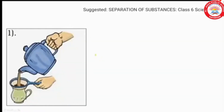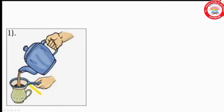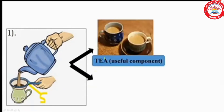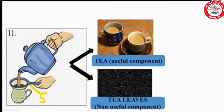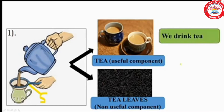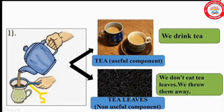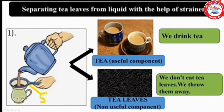The first example: we use a strainer to separate tea leaves from tea. Here we are separating two components — the first one is tea and the second one is tea leaves. Tea is the useful component and tea leaves are the non-useful component. We drink the tea and throw the tea leaves away.